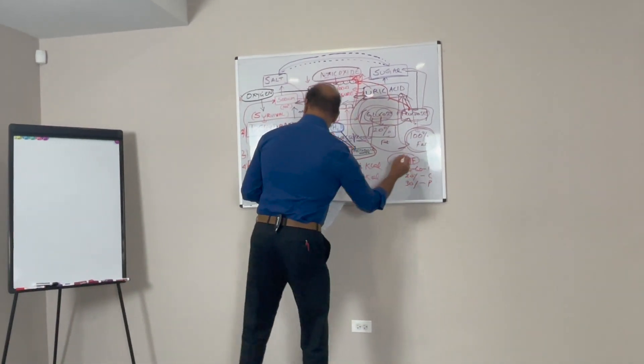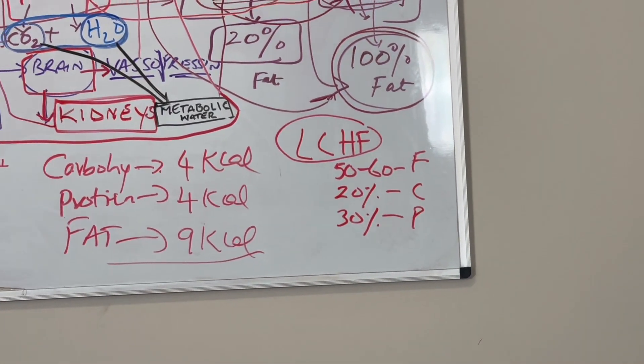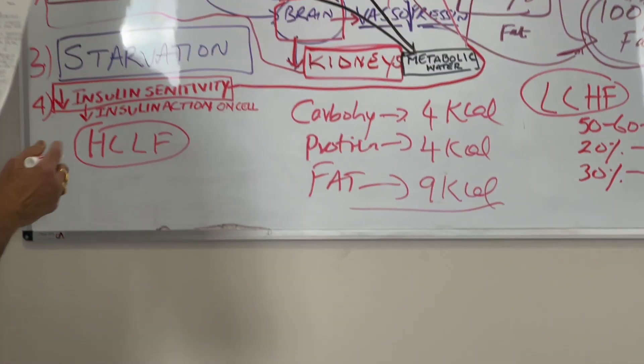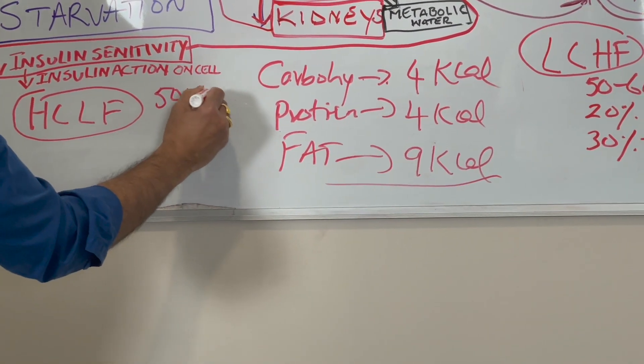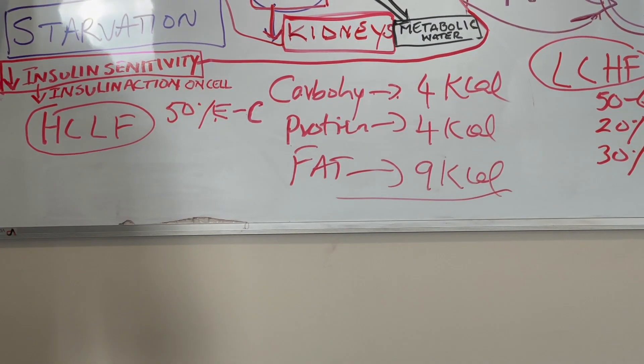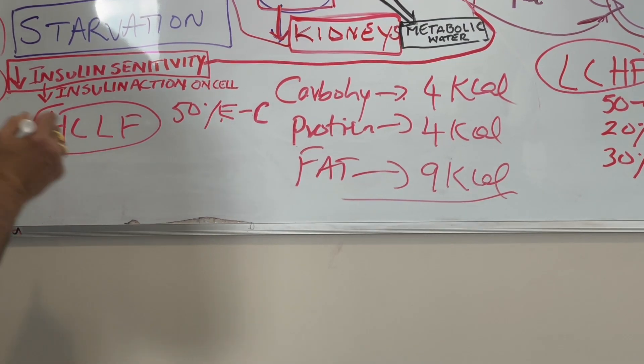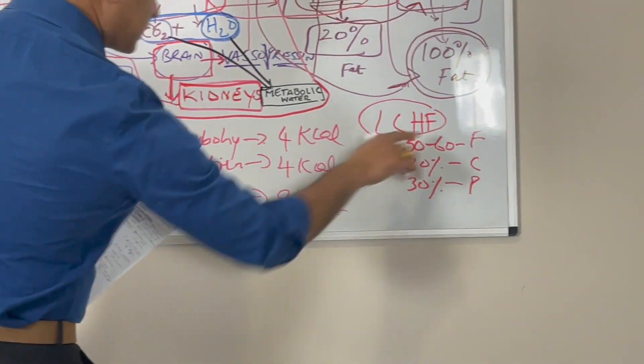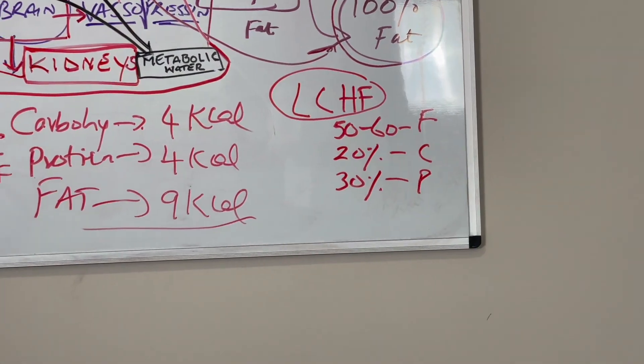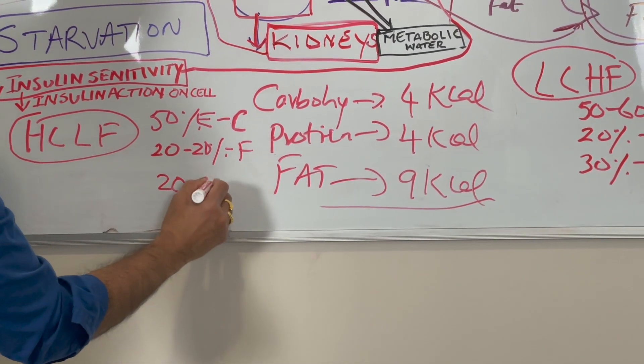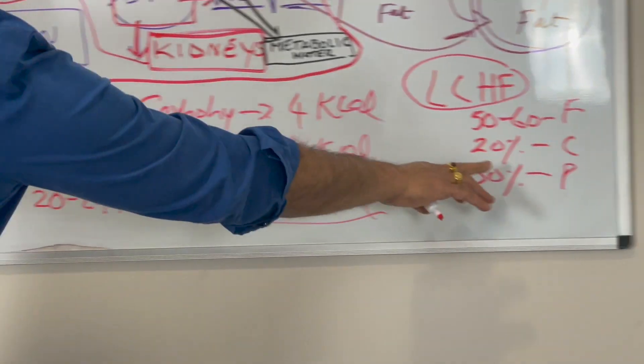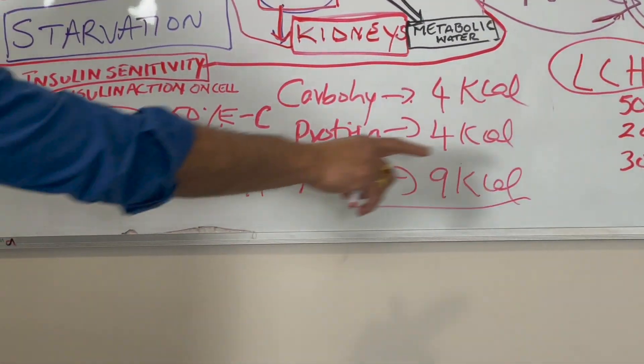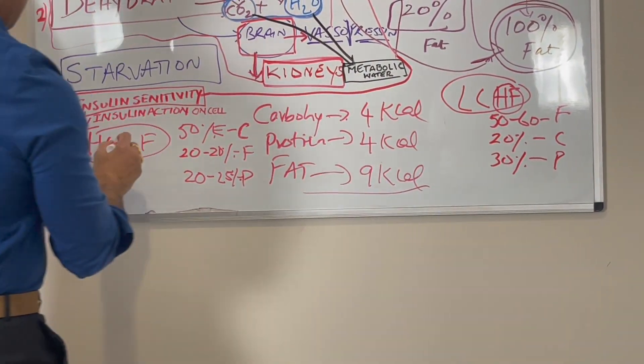The other arm, high carbohydrate low fat, which is the standard diet given to diabetics, has 50 percent energy from carbohydrates, 20 to 30 percent from fat. The protein is 20 to 25 percent here. The protein didn't change much, mostly the difference is in the higher fat.